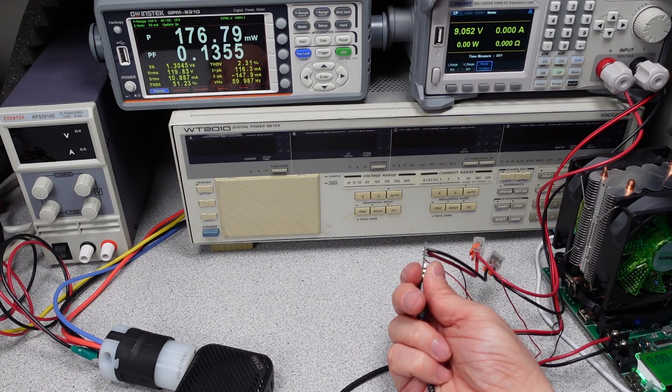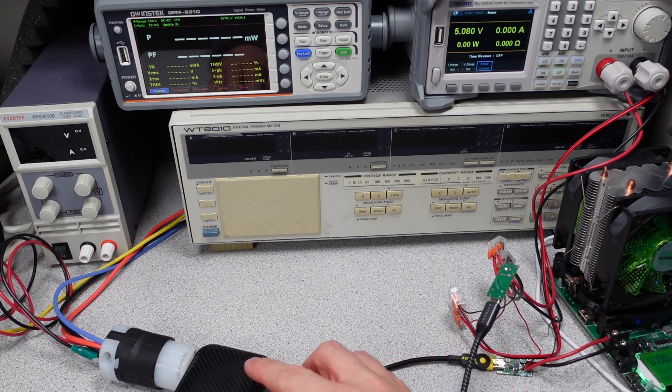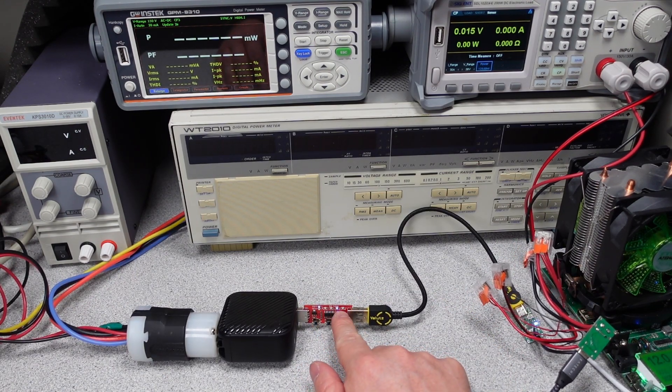So we got 5 volts, 9 volts, 12 volts, and that's it on the third port, but that's only a 20 watt port. Check the USB-A port. This is a QC board, so this will check the different voltages that this can deliver.